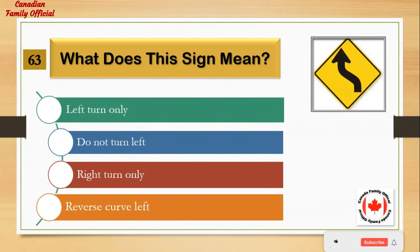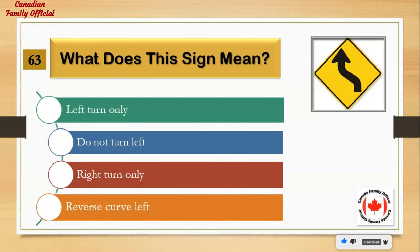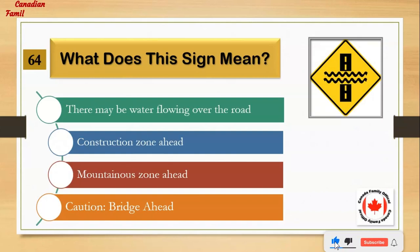What does this sign mean? Number 1: left turn only. Number 2: do not turn left. Number 3: right turn only. Number 4: reverse curve left. And the answer is: reverse curve left.